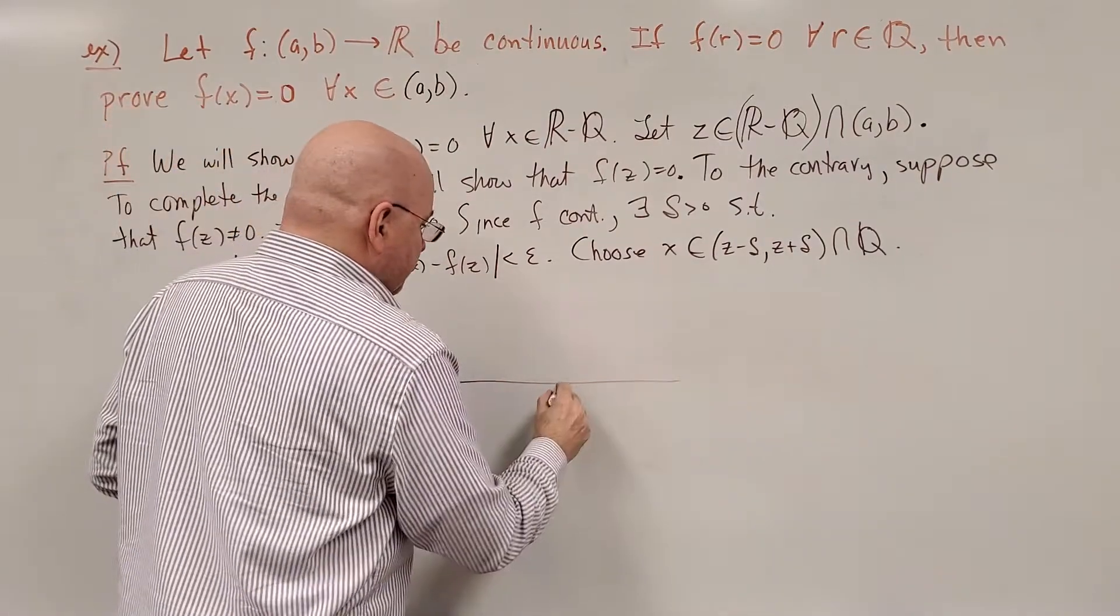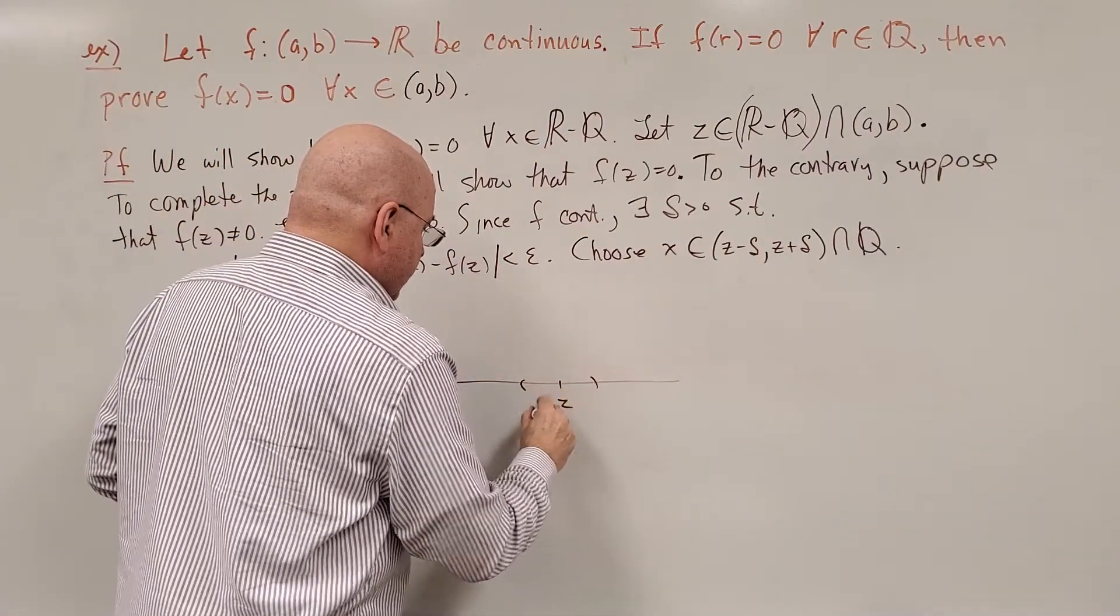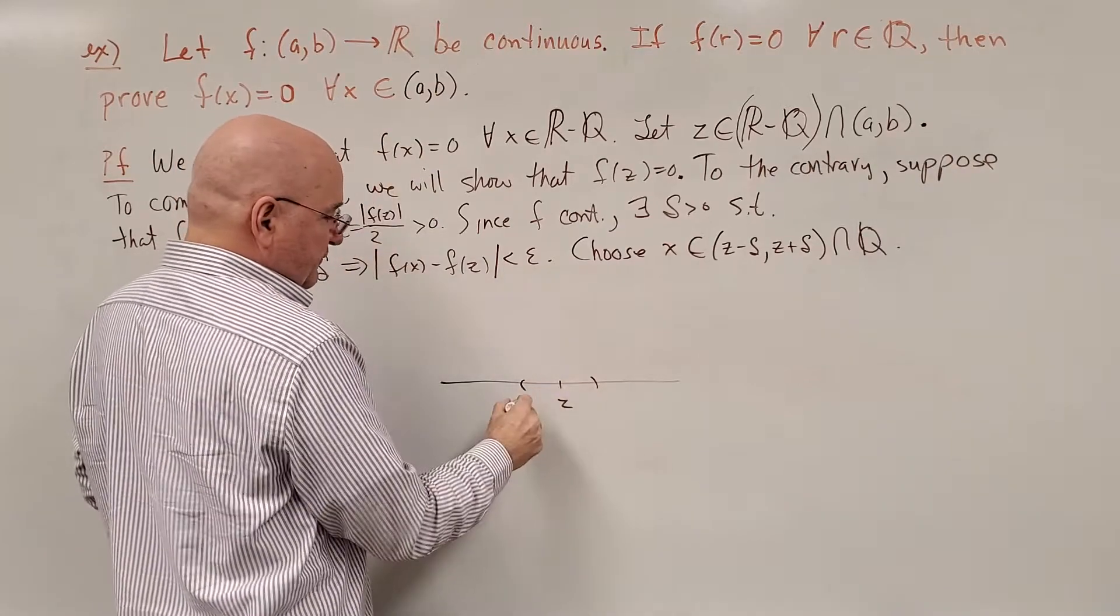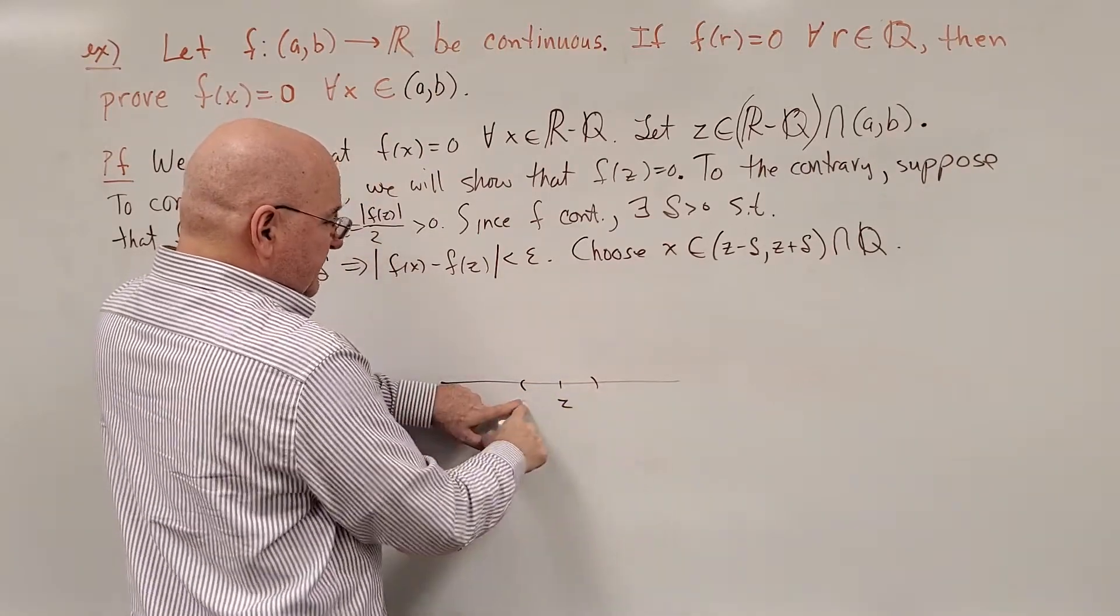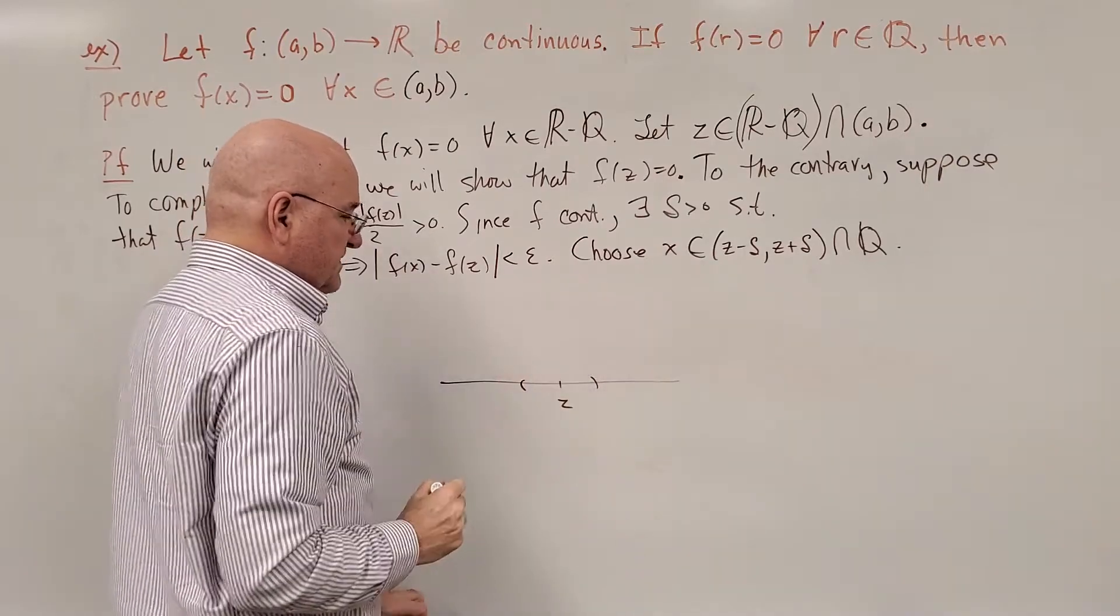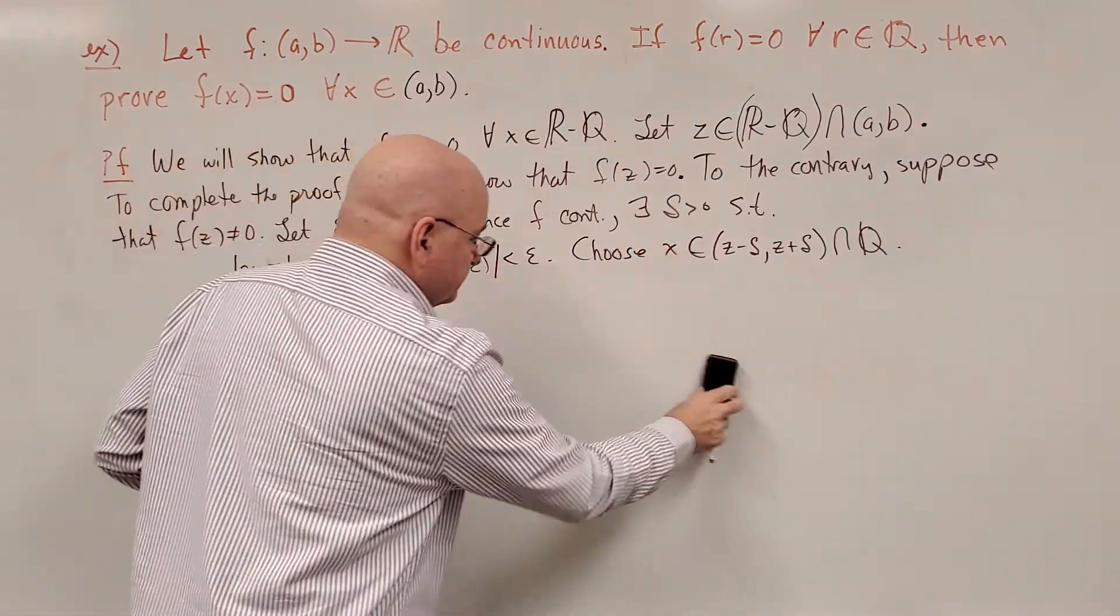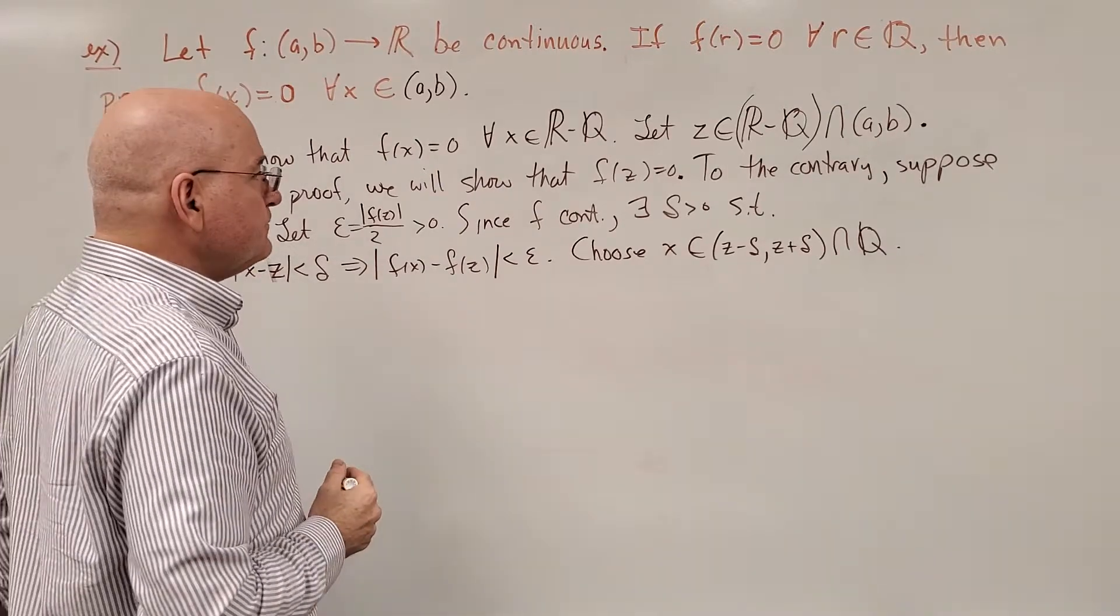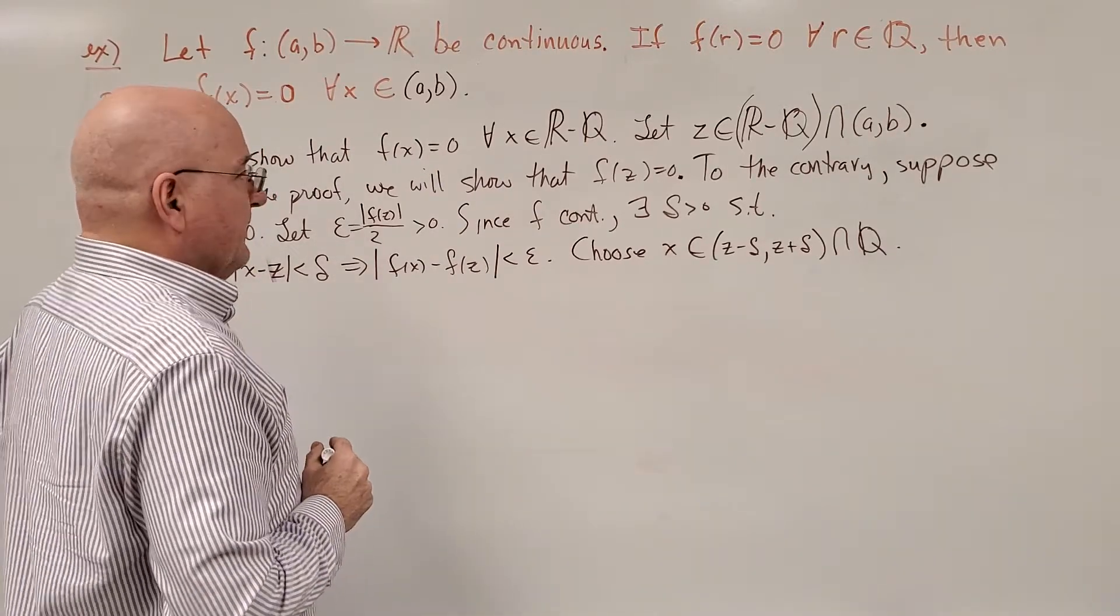So, maybe I shouldn't have drawn that out. All we've done here is we're picking a rational number in this interval from z plus or minus delta. So, f(x) is going to equal 0 because it's rational.